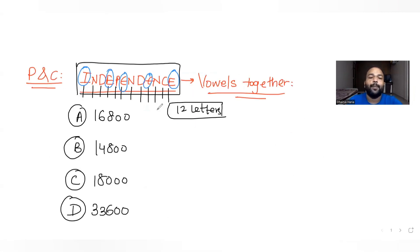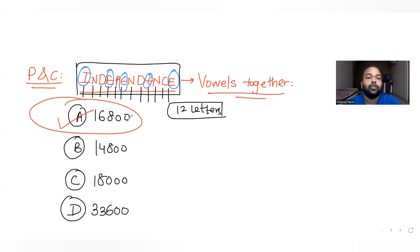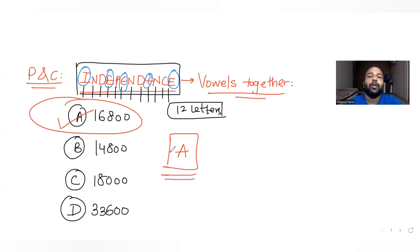We get the answer matching with option A, so option A — 16,800 — is the correct answer for the question given to us.